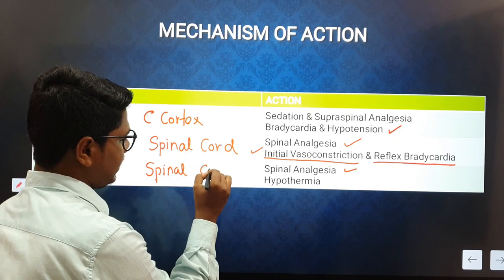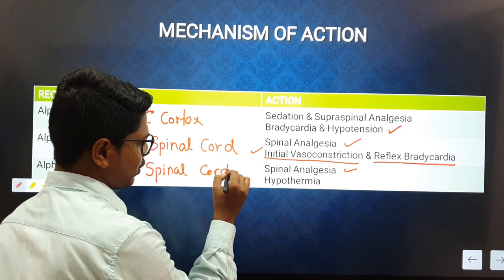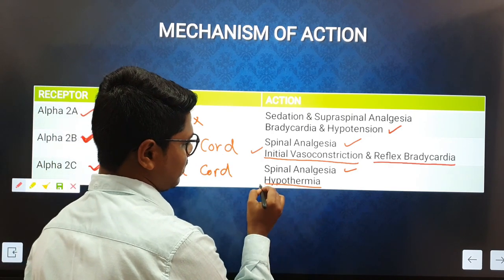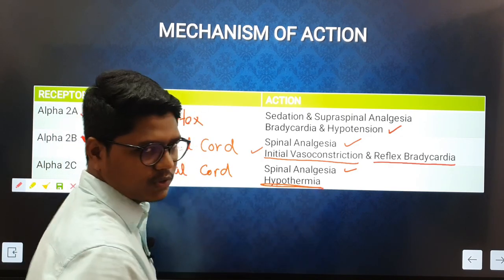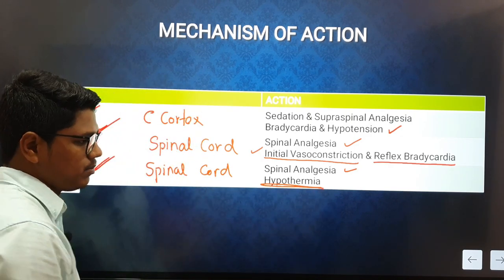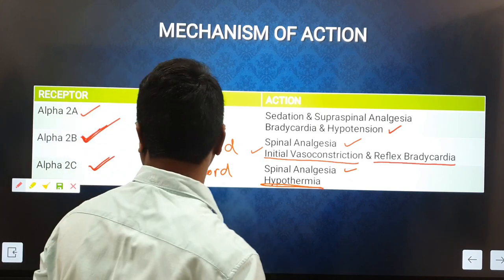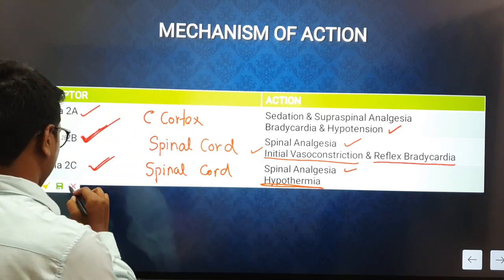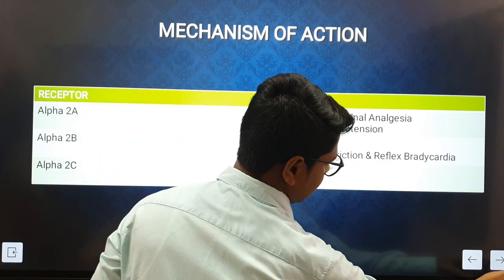The alpha-2C receptors also produce spinal analgesia and are also present in the spinal cord. Additionally, you will find hypothermia — a reduction in body temperature.